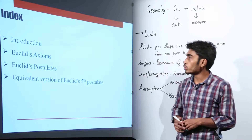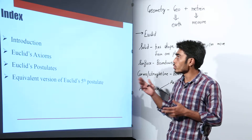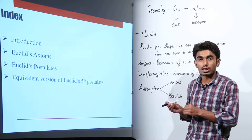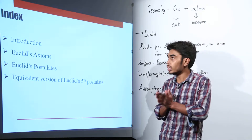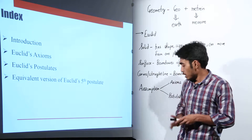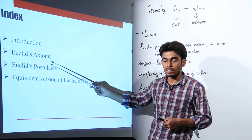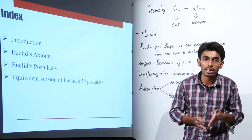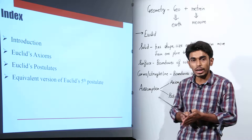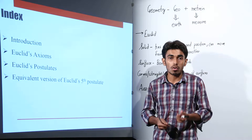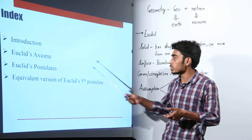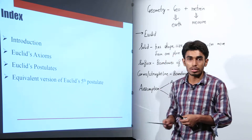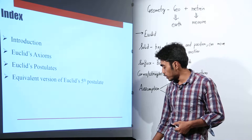Now let us see what we are going to study in this chapter. First of all, we will see the basic terms and basic definitions that we are going to deal with. Then we will take a look at Euclid's axioms and Euclid's postulates, and we will learn about the difference between an axiom and a postulate. Then there was a key point in Euclid's postulates — the fifth postulate — and we will learn about the equivalent version of this postulate. So let us start with the chapter.